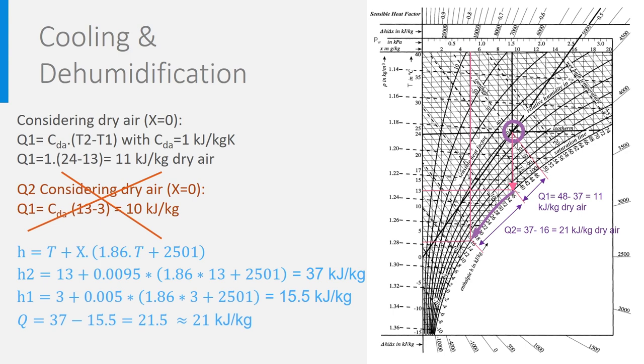So, when the absolute humidity changes, we cannot neglect anymore the energy content of the water vapor, and this comes mainly from its high latent heat of evaporation, which is a bit more than 2500 kJ per kilogram.